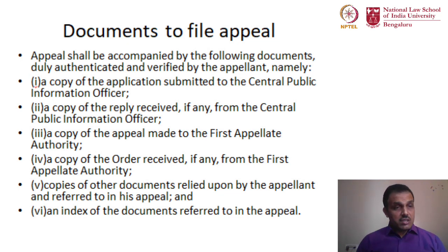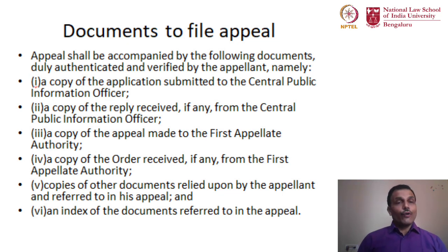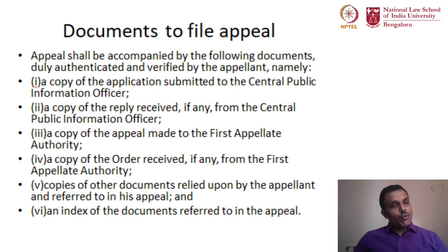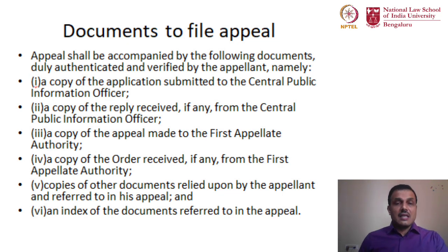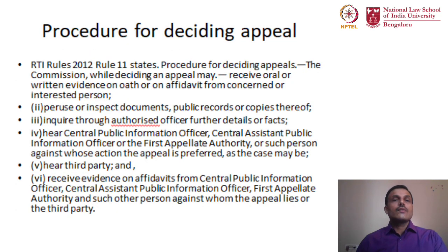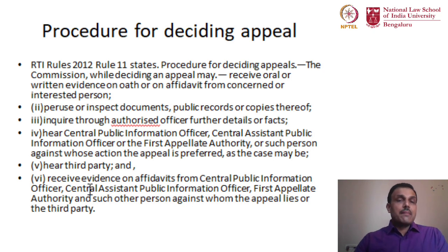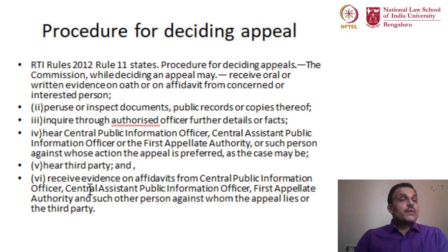You have to frame the appeal petition yourself — setting out the grounds and how you expect the Information Commission to help. The documents of appeal are only attachments; the petition of appeal has to be drafted by the citizen himself. The procedure for deciding the appeal can be determined by the Information Commission, but the RTI Rules additionally specify what the process should be, and the Information Commissions are bound to follow those rules.